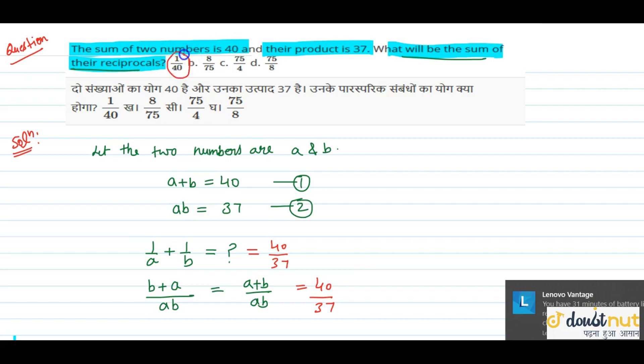The first option is 1 by 40, 8 by 75, 75 by 4, 75 by 8. So there is no option match.